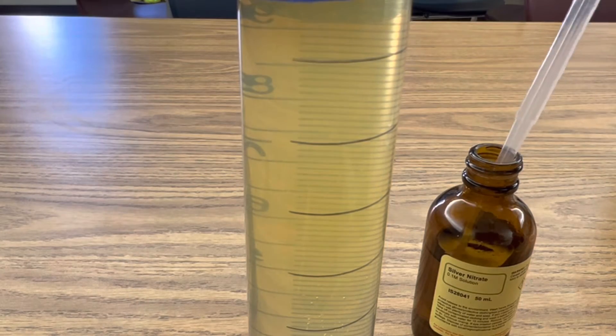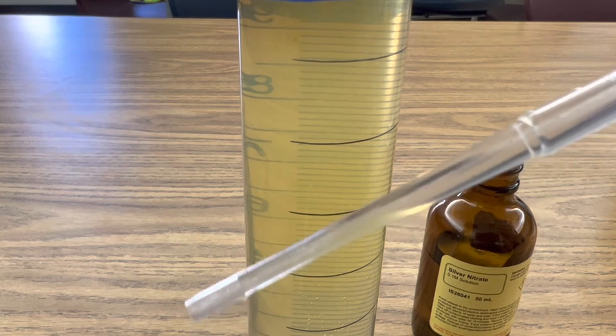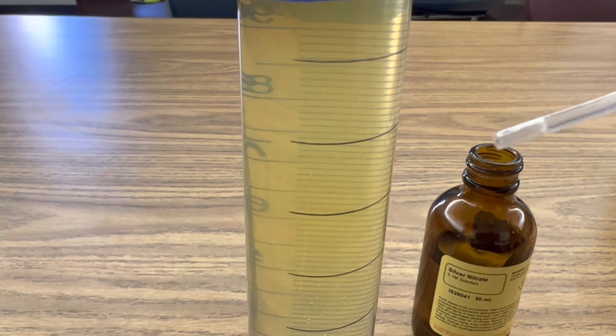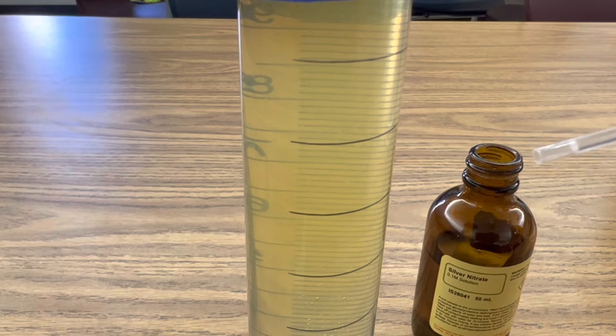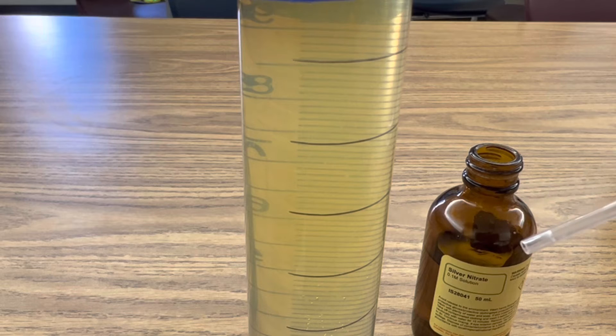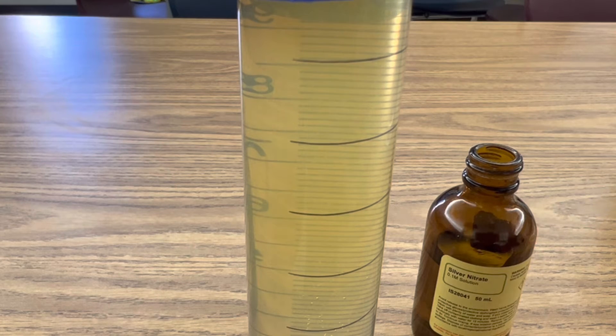So now I'm going to add drops of silver nitrate, and you can see that it's clear, to my aqueous solution of iron sulfate. And when I do that, this is a double displacement reaction where the metal ions trade places and the silver nitrate will create the precipitate of silver sulfate. So let's see what that looks like.